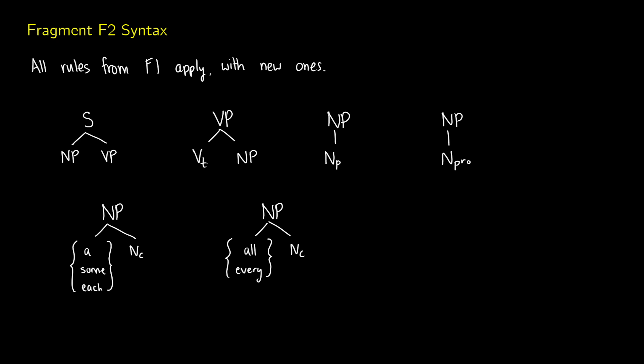In the last two videos we covered predicate logic and scope ambiguity, and now we're going to take a look at how we can deal with these types of things in our fragment F2 of syntax. If you haven't seen the F1 video, it's in the semantics and linguistics playlist. All of those rules will apply, all of our lexical entries will apply, but we're going to modify some and add new ones to account for quantifiers, as well as pronouns, which we'll cover in the next video.